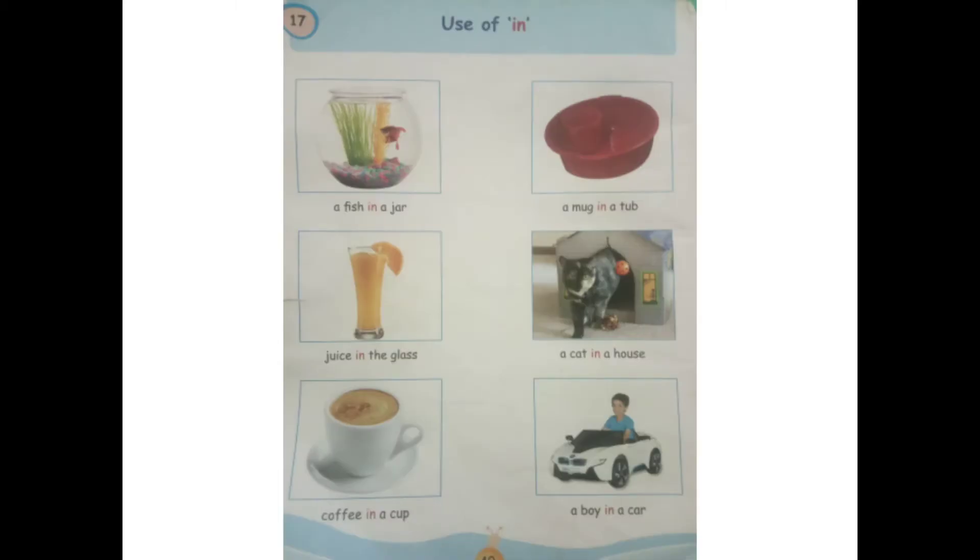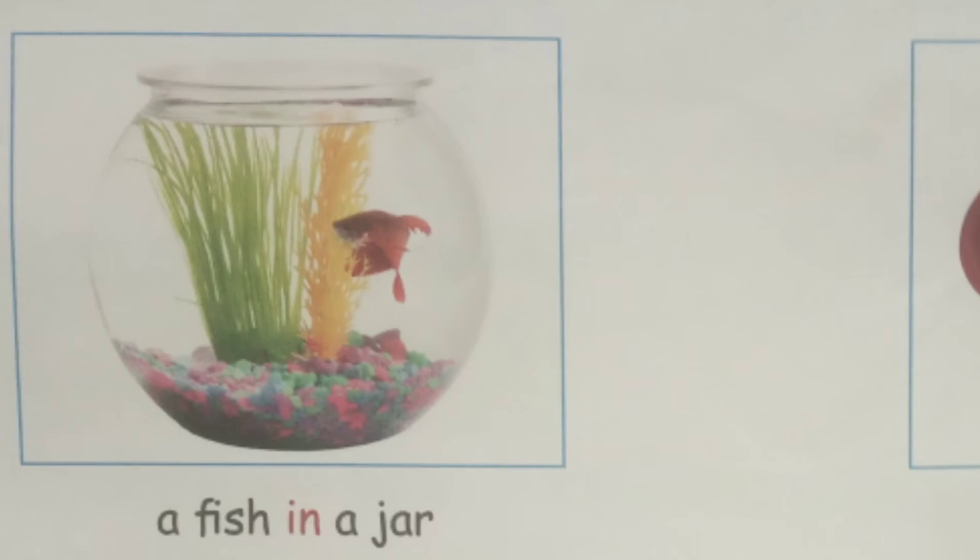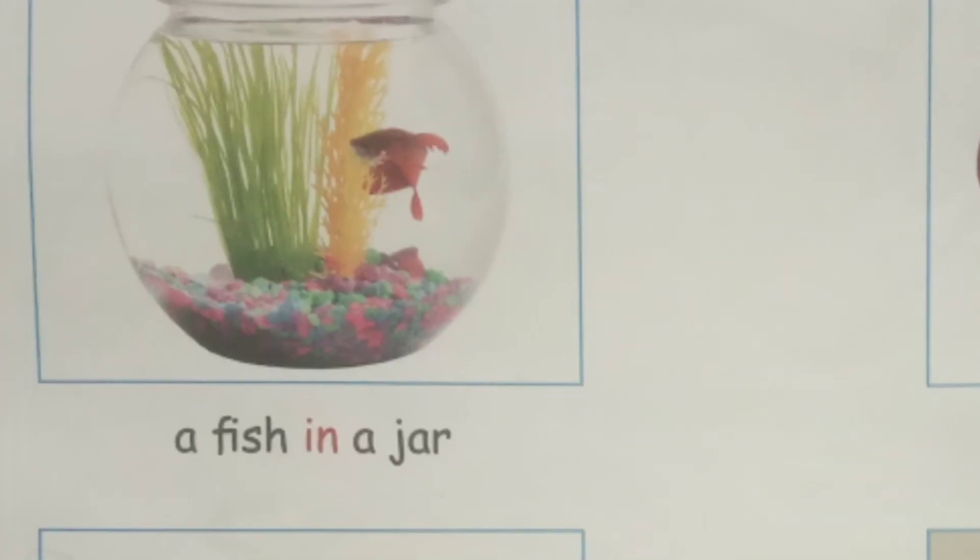So use of in first. A fish in a jar. A fish is in a jar. It is a jar in a jar.